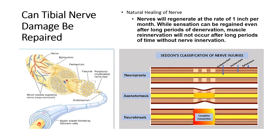If the nerve has been damaged, there are multiple different types of damage. You can damage just the outer protective coating of the nerve — that's called neuropraxia. You can also damage the outer covering as well as the inner nerve fibers themselves. Or you can have a complete severing of the nerve. Each one of these is progressively more severe, and sometimes there's a combination of nerve injury types rather than just one specific type.